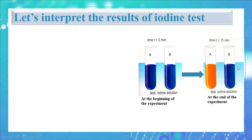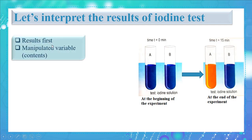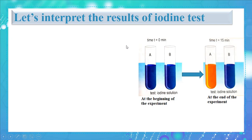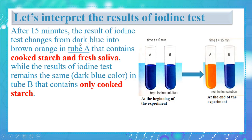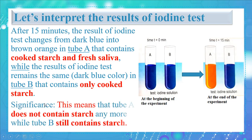After 15 minutes, the result of the iodine test changes from dark blue to brown-orange in tube A, which contains cooked starch and fresh saliva, while the iodine test result remains dark blue in tube B, which contains only cooked starch. This means that tube A no longer contains starch, while tube B still contains starch.